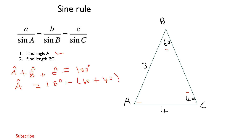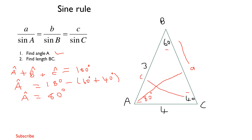This gives us 180° minus 100°, so angle A equals 80°. Now for the second question, we need to find length BC. BC is opposite angle A, so it is represented by lowercase a. The side opposite angle C is lowercase c, and the side opposite angle B is lowercase b. We need to find lowercase a, and we can choose to equate a with b or a with c.